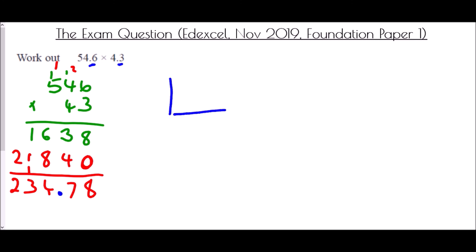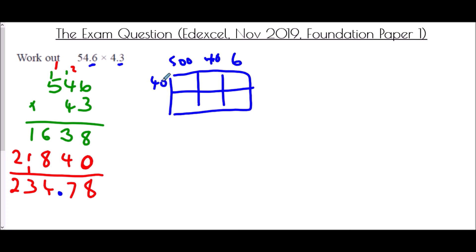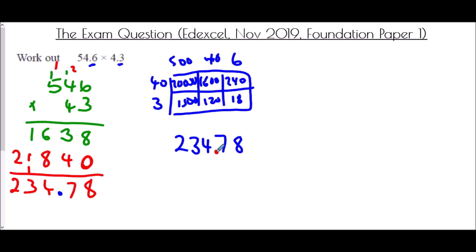For the grid method, I set it up the same way: 500, 40, and 6 versus 40 and 3. 40 times 500 is 20,000; 40 times 40 is 1,600; 40 times 6 is 240; 3 times 500 is 1,500; 3 times 40 is 120; 3 times 6 is 18. Adding all those together gives 23,478 again, and putting the decimal point two places in gives 234.78.